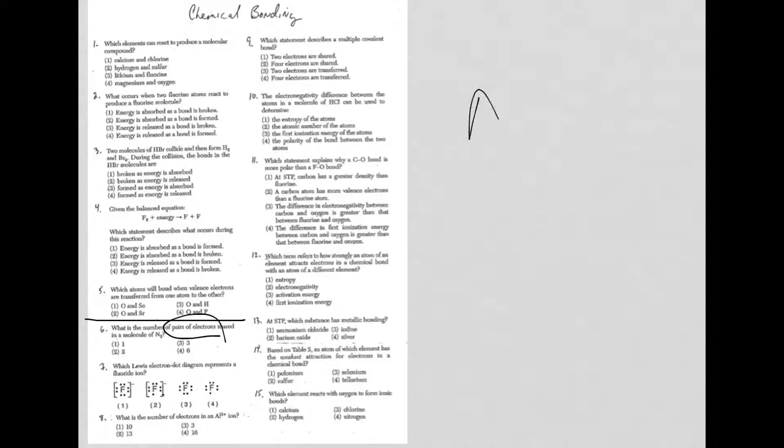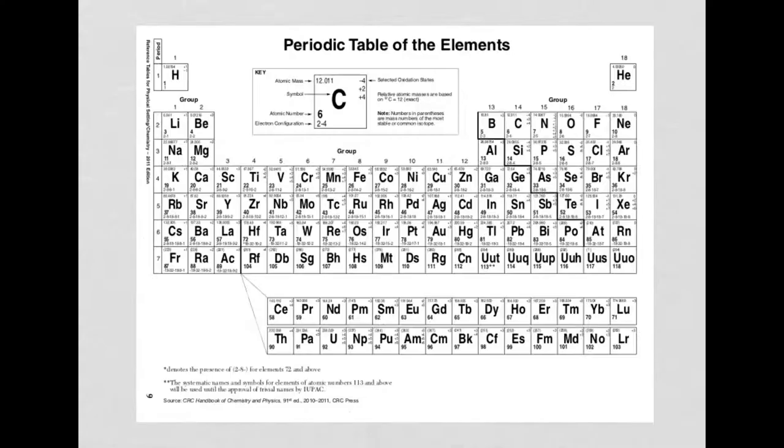The other is a molecule of N2. How many bonds are there between these two atoms? If we go to the periodic table, nitrogen is in group 15. Nitrogen has 5 valence electrons.